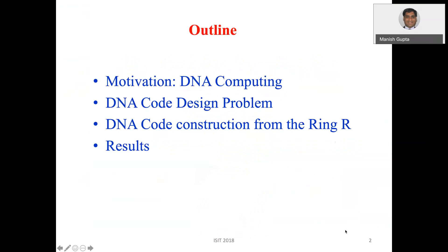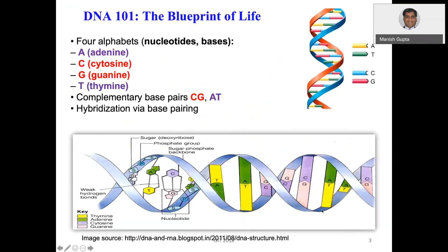DNA 101: the blueprint of life is DNA, which stands for deoxyribonucleic acid. The backbone of DNA is these four nucleotide bases — adenine, cytosine, guanine, and thymine — which stand for A, C, G, T. DNA occurs in two forms: single-stranded and double-stranded. In double-stranded DNA, there is a hydrogen bond between A and T, and between C and G, so A and T are complements and C and G are complements.